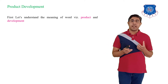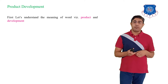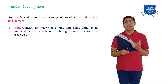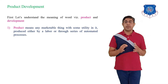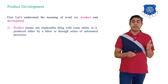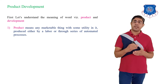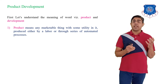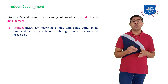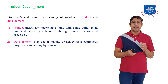Firstly let's understand the meaning of two words. First is the product and second is the development. Product means any marketable thing with some utilities in it. For example, a gear or shaft has the utility to transmit power. It can be produced either by labor or through a series of automated processes.